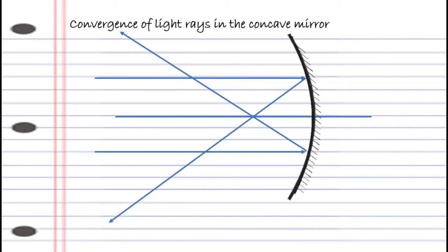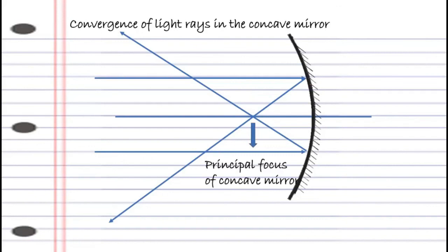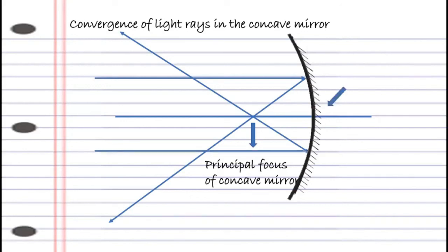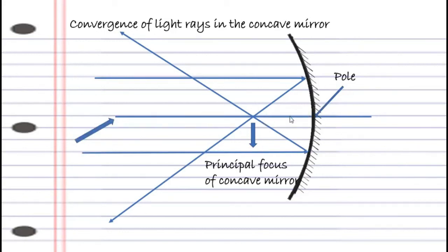This is what the diagram for convergence of light rays in the concave mirror. You can draw only two light rays, not so many as shown in the animation. The point where these two rays meet is called the principal focus of the concave mirror. This is the concave mirror — remember this, this is a very important concept. The center of the mirror here is called the pole. And if you can find the axis there — this is the axis which passes through — we call it the principal axis.